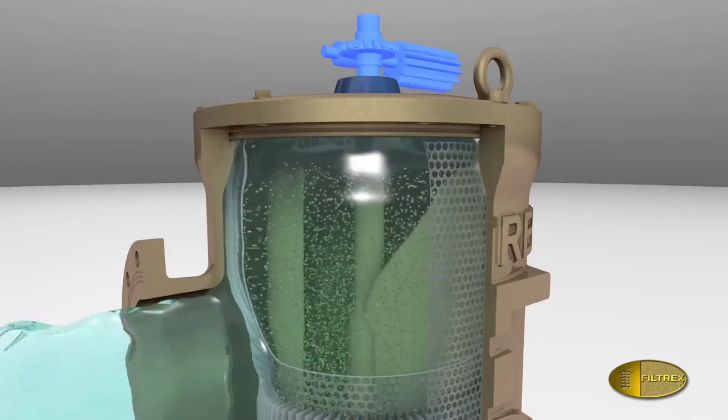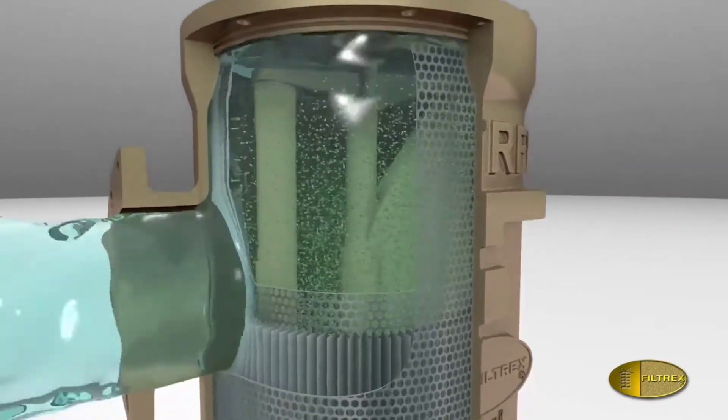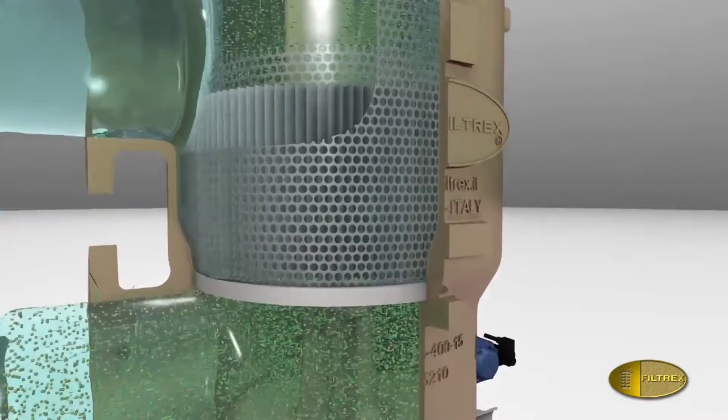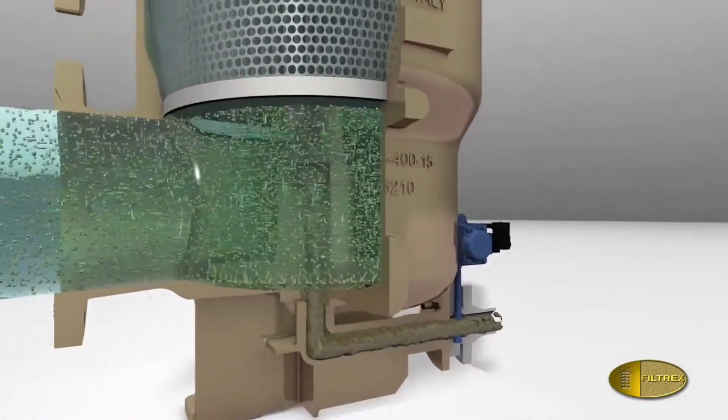Thanks to the suction effect generated, the impurities are transported by the flow in the backwash line through the sludge duct and the backwash valve for disposal.